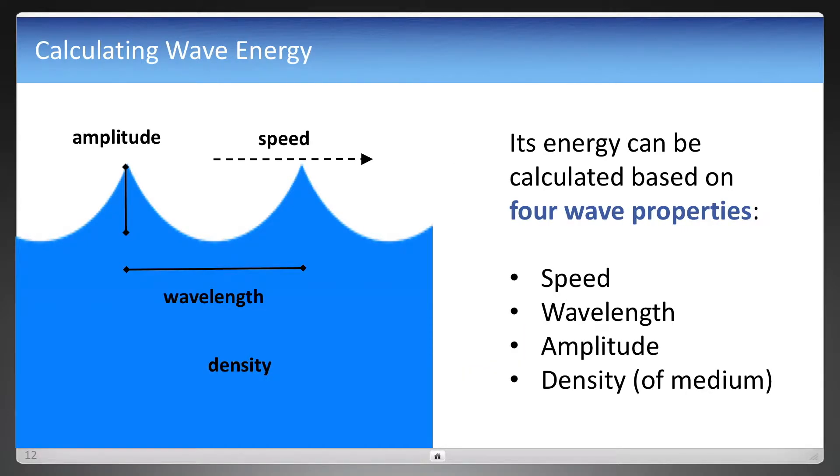And so what is that energy and how do you calculate it? You can calculate it based on these four things: the wave speed, the wavelength between the two waves, its amplitude, and then lastly, the density of something that's traveling in the medium.